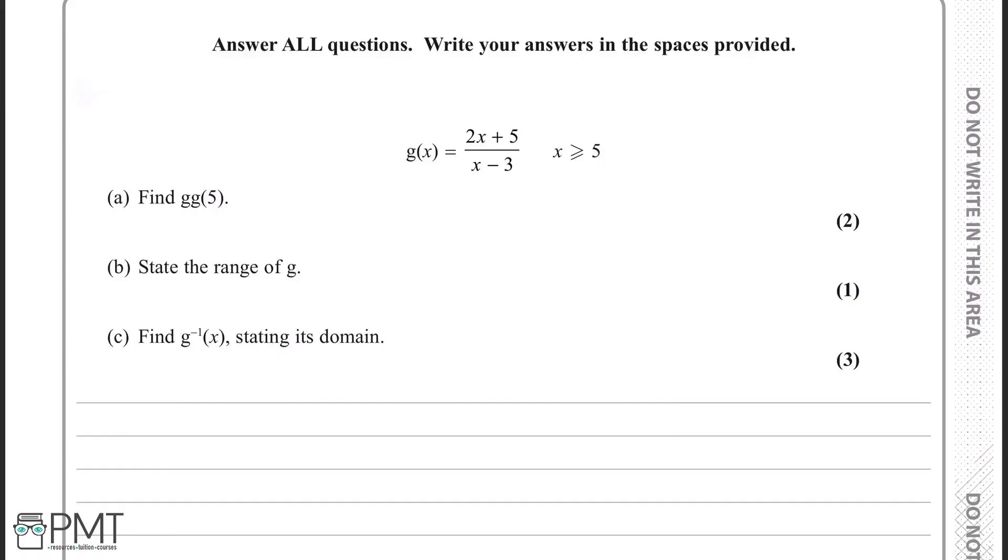So in this question, we're given that g of x is 2x plus 5 over x minus 3, and we're given the domain for this function, which is that x is greater than or equal to 5, and we need to find now what g of g of 5 is.